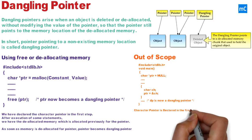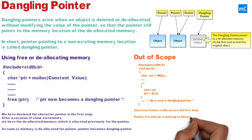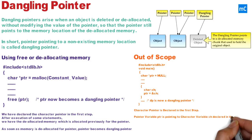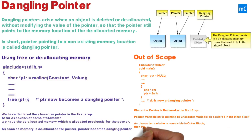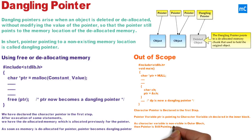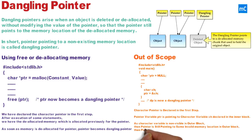In this example, a character pointer is declared in the first step. The pointer variable ptr is pointing to a character variable inside a block. As the character variable is not accessible in the outer block, the pointer is still pointing to the same invalid memory location in the outer block, and so the pointer becomes a dangling pointer.